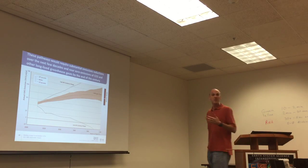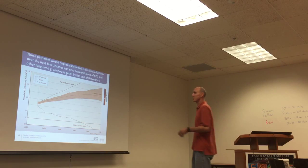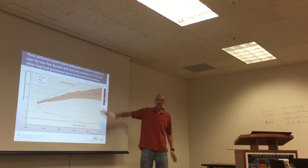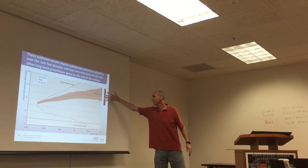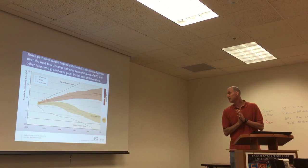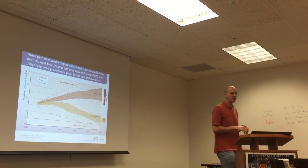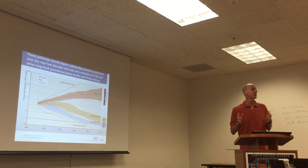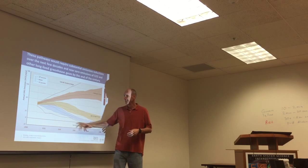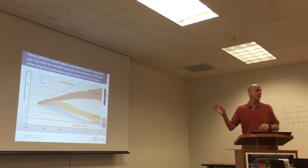The question is what that means about emissions reductions. Here's the baseline reference scenario range — around 1,000 parts per million or greater. Here is the likely chance of staying below 3 degrees, corresponding to 580 to 650 scenarios roughly. And here's the 2-degree pathway. The negotiations are about trying to get from up there down to here. All of these are again runs from integrated assessment models.